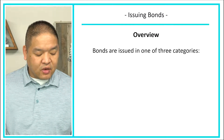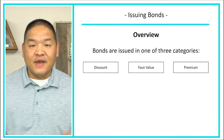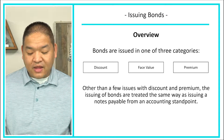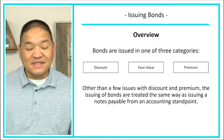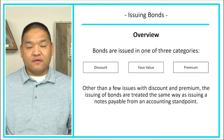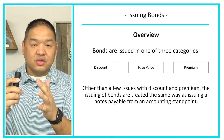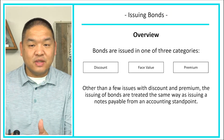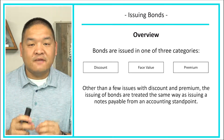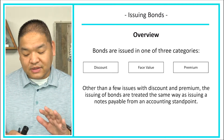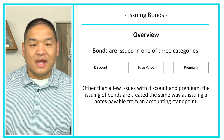Bonds are issued in one of three categories: they are either issued at a discount, face value, or premium. Other than a few issues with discounts and premiums, the issuing of bonds is treated the same way as issuing a notes payable from an accounting standpoint. We're going to look at what the journal entry looks like for a discount, face value, and premium, and there is a little bit of modification we'll have to deal with for discounts and premiums.